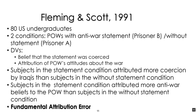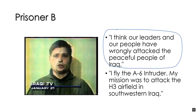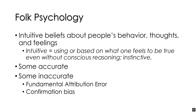That last difference — attributing personal anti-war beliefs to Prisoner B — that is the fundamental attribution error: people take others' statements or behaviors at face value and use them as diagnostic of what that person truly believes. People focused on the statement 'I think our leaders and our people have wrongly attacked the peaceful people of Iraq' and assumed it reflected the prisoner's personal opinion. That's odd, because all of those prisoners were prisoners of war under armed guard, beaten, with machine guns pointed at them while reading statements written for them by the Iraqis.